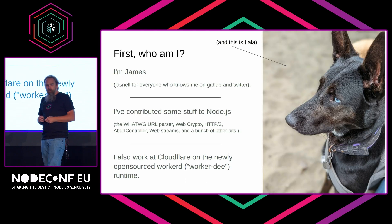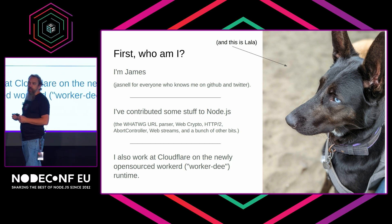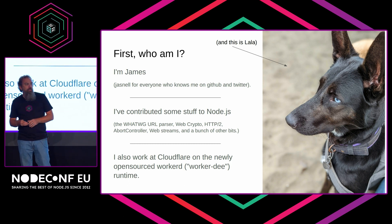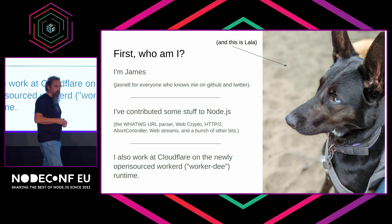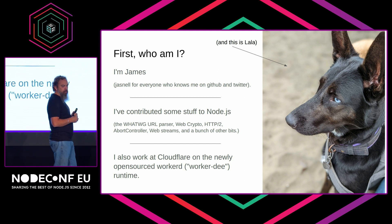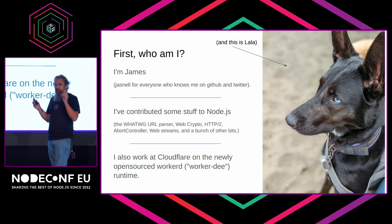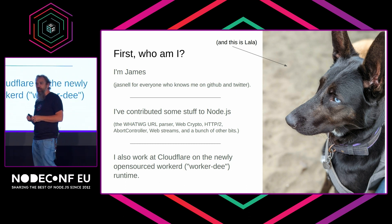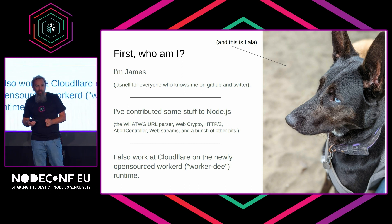So, who am I? I'm James — J.A. Snell, for everyone who knows me on GitHub and Twitter. I've contributed a few things to Node over the years: the URL parser, web crypto, HTTP/2, abort controller, web streams, a few other things. My latest small contribution is a 38,000-line PR that is adding QUIC — so, a few small things.